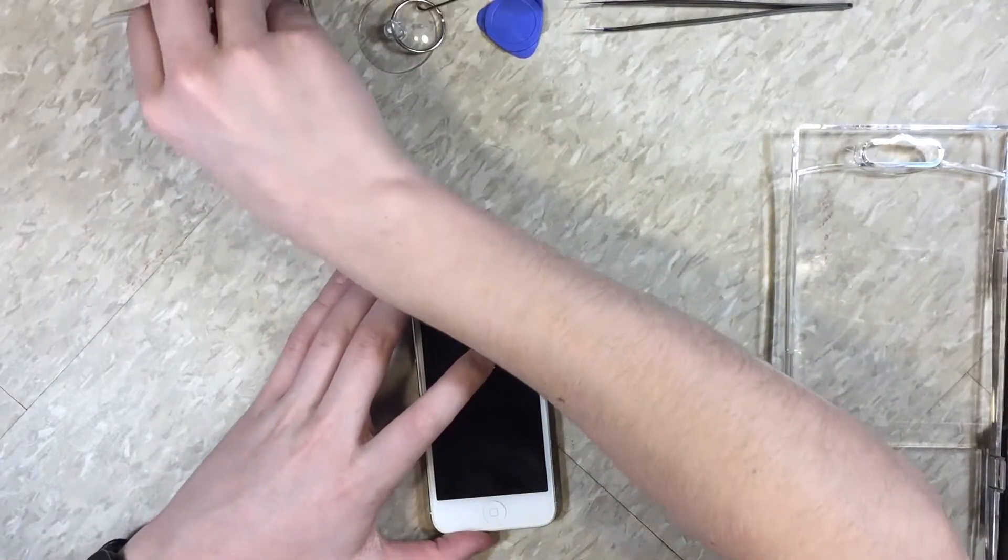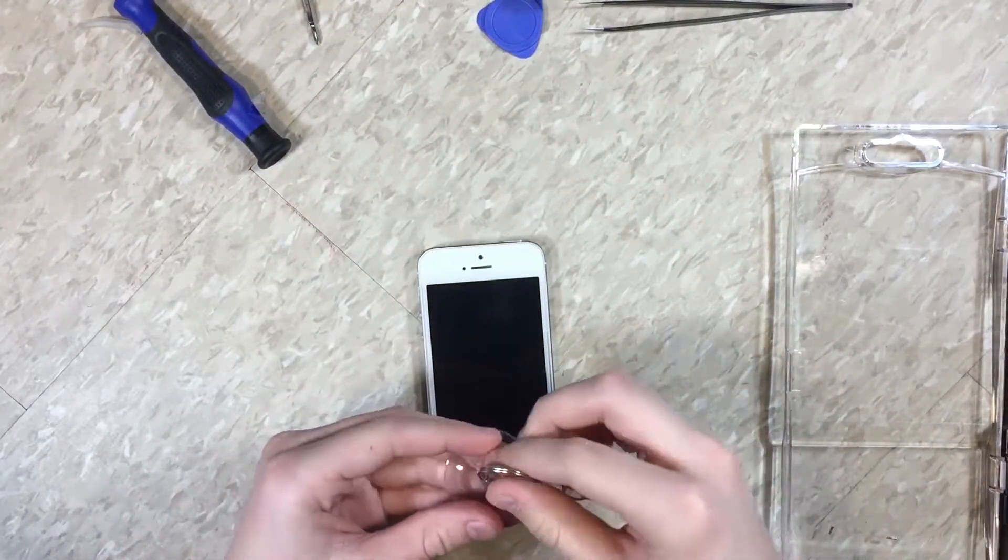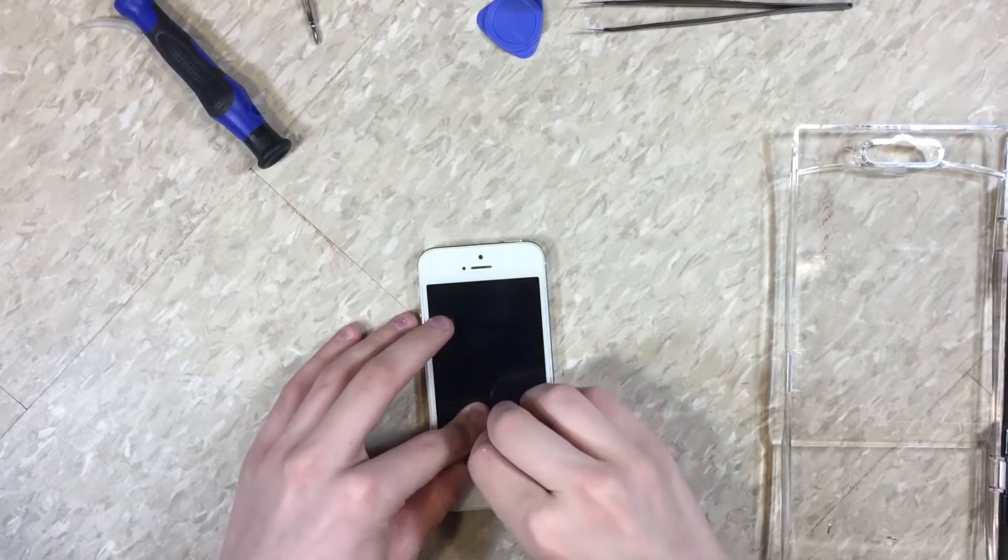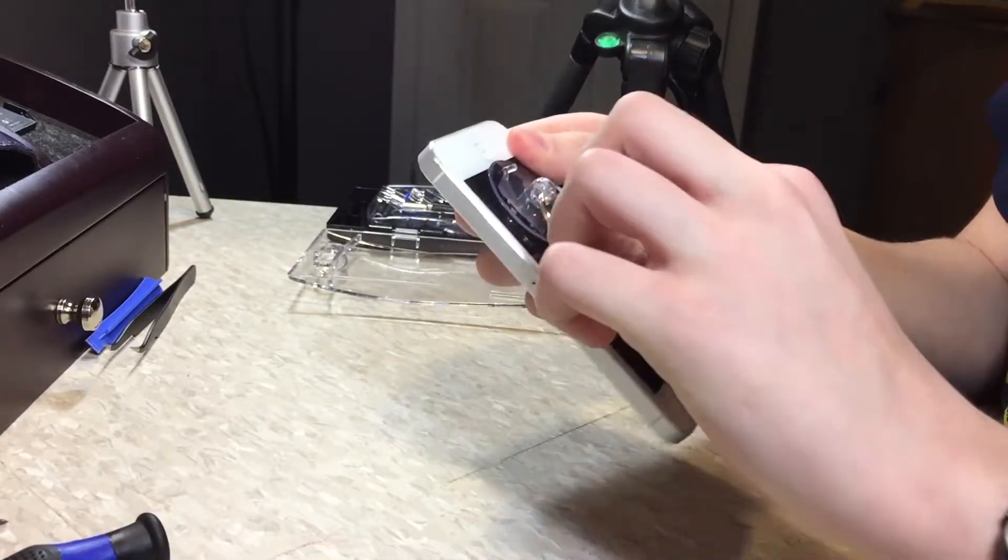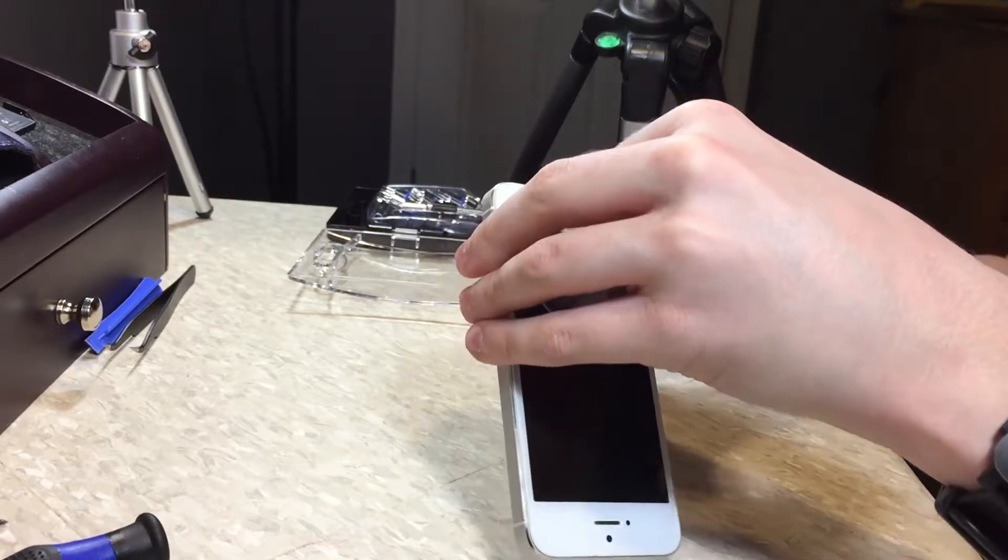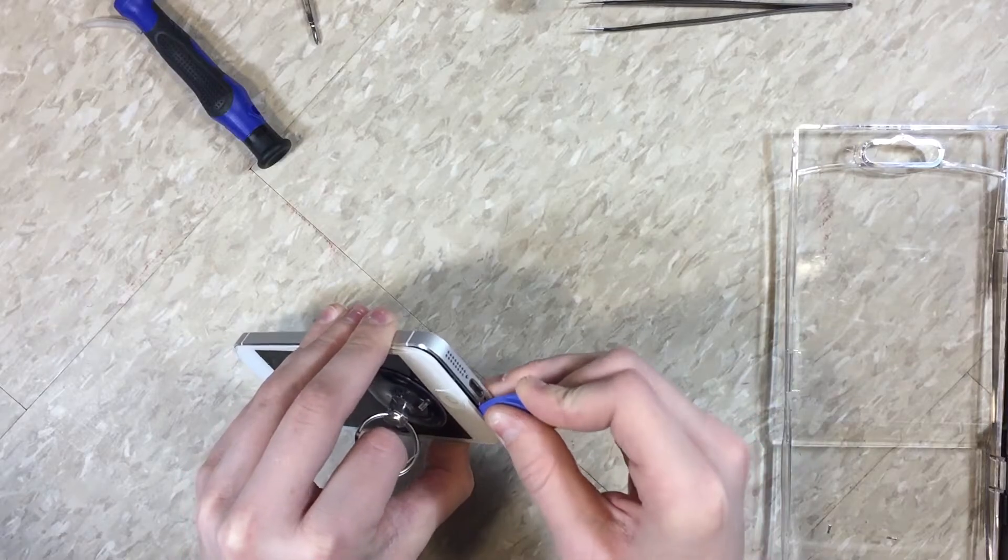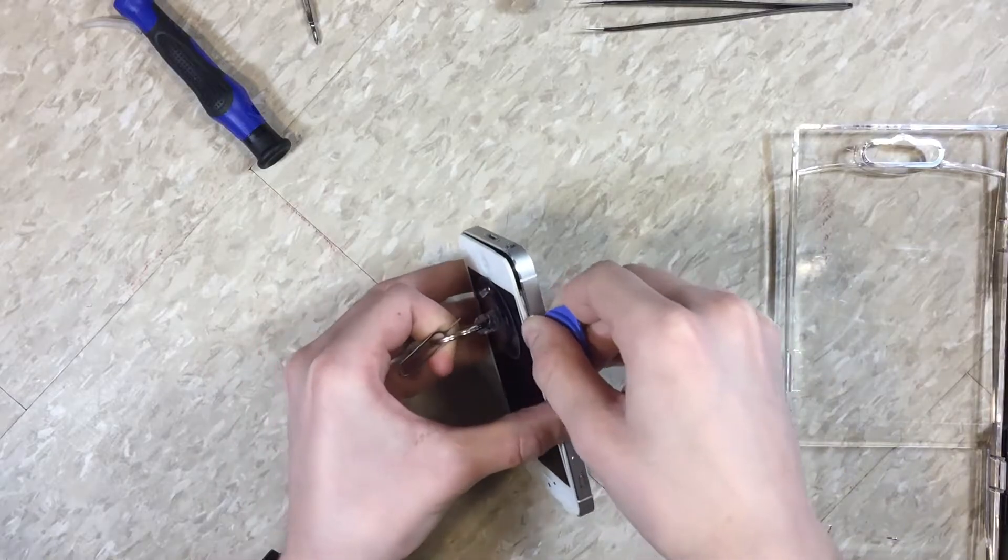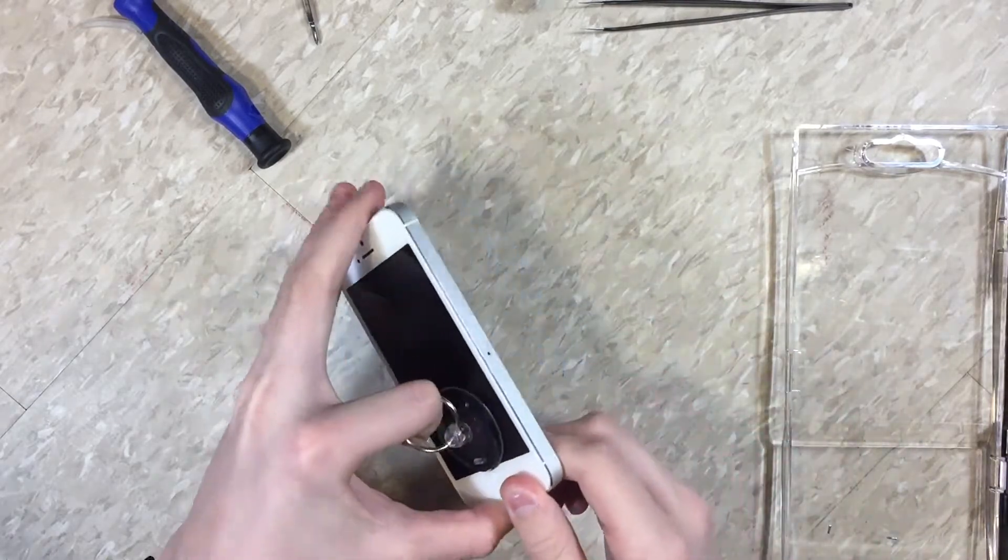Now that we have that done, go ahead and grab your suction cup, place it near the home button, and next you're going to grab your pick. And while you are pulling up on the suction cup here, you're going to get underneath with the pick, and just go around these sides, opening up the device.